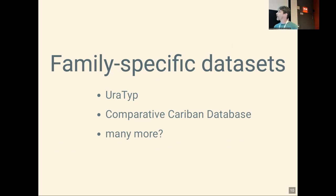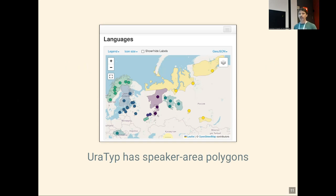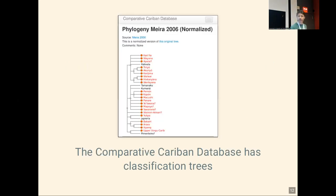There are also family-specific datasets. We'll hear about Urotip, and one I've been recently involved with is the Comparative Caravan Database. Urotip has a specialty: not only typological data but speaker area polygons, and even historical data about speakers, showing what you can do with a more focused interest in getting better data. The Comparative Caravan Database has typological data mostly on morphology, plus classification trees with different classification proposals for the family in question.